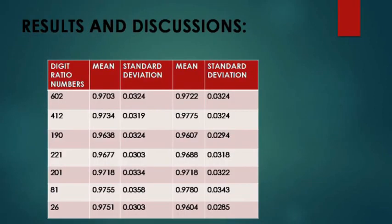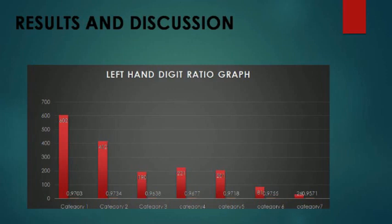Here are the results. We have taken the digit ratios for men and women along with their mean and standard deviation as a reference. For 602 samples, the mean for men is 0.9703 and standard deviation is 0.0324, whereas for women the mean is 0.9722 and standard deviation is 0.0324. This is the graph of the left-hand digit ratio — the frequency is maximum at 602 and minimum at 26.